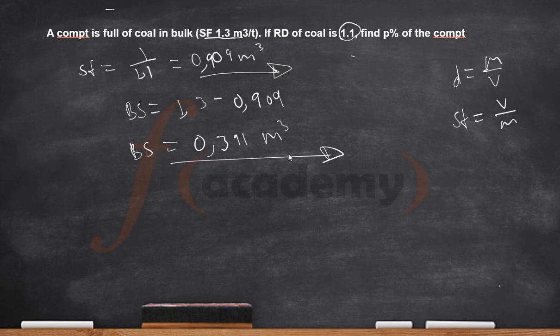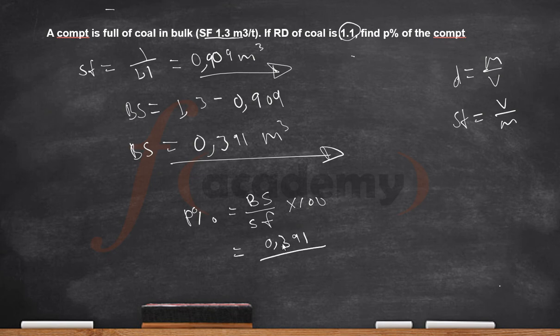Remember again the formula for permeability: permeability is equal to broken storage all over storage factor, then times by 100 because it should be in percentage. Your broken storage now is 0.391 all over storage factor given from your statement which is 1.3, times 100. Then you get an answer of 30.1% of permeability in this compartment.